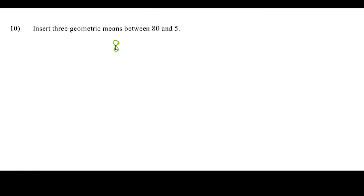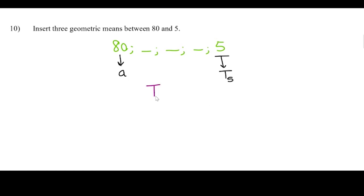Let's try another one. This time we're going to insert three geometric means between 80 and 5. So we'll have 80, then a geometric mean, another one, another one, and then 5. That results in 80 being 'a' and 5 being the fifth term of our sequence, t5. Remember our formula: tn = a·r^(n−1).